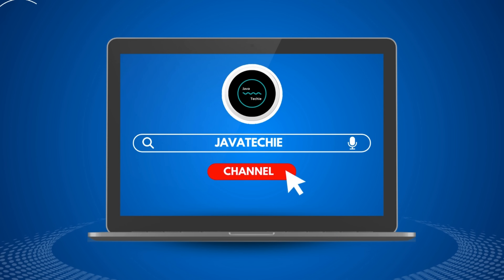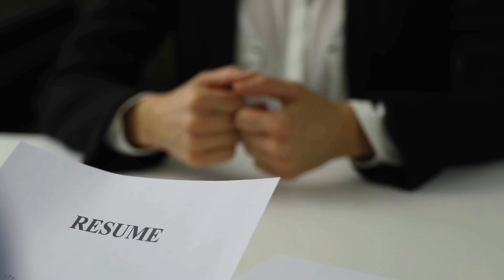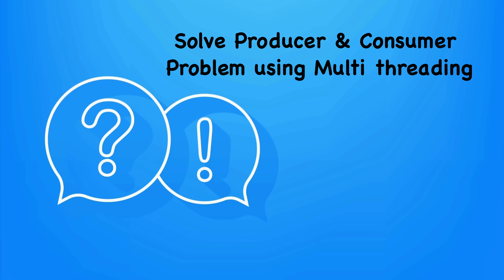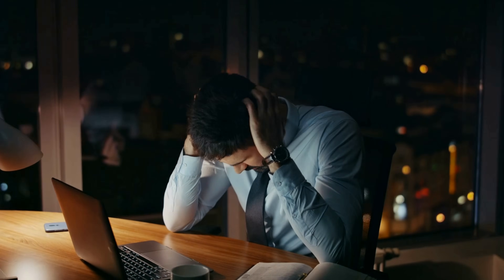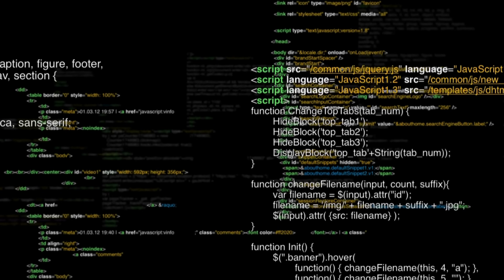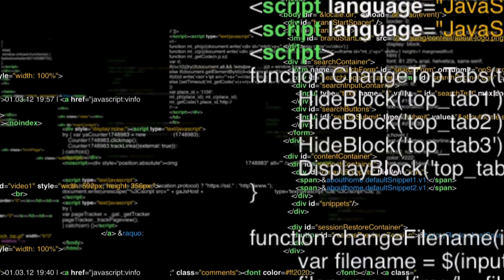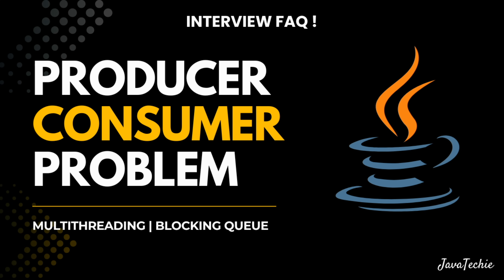Hi everyone, welcome to Java Techie. If you have ever attended a Java developer interview, you might have faced this classic question where the interviewer asks you to design the producer and consumer problem in Java using multi-threading, or maybe design a shared buffer using a queue. In this tutorial we are going to solve the producer-consumer problem step by step with different approaches. By the end of this video you will have the confidence to tackle this question in any future interview. So without any further delay let's get started.